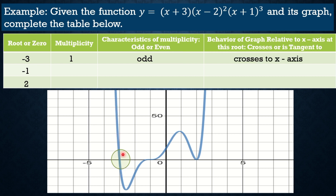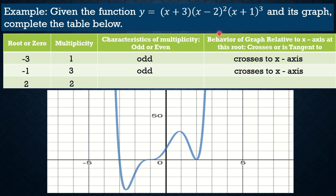The multiplicity of -1 is 3, which is still an odd number, so at x = -1 the graph still crosses the x-axis. The multiplicity of 2 is 2, which is an even number, so the graph is tangent to the x-axis at x = 2.